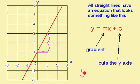So my equation will be y equals 2x, because the gradient is 2, and then the line cuts the y axis at 1, so it's plus 1, and this is the equation of my straight line.